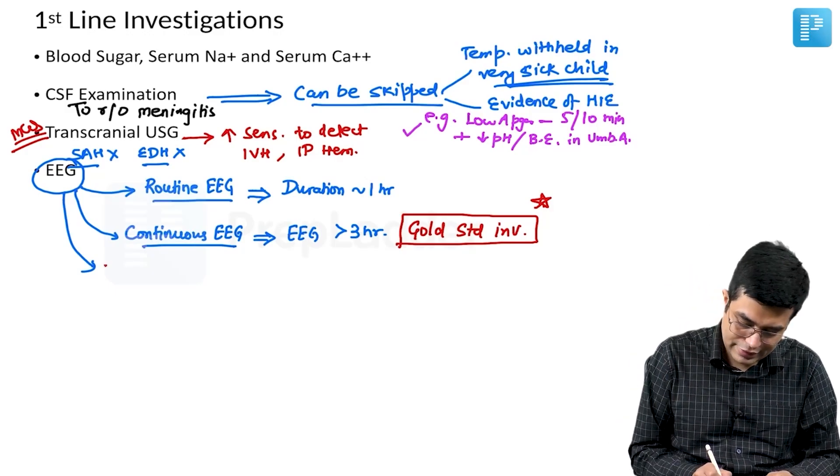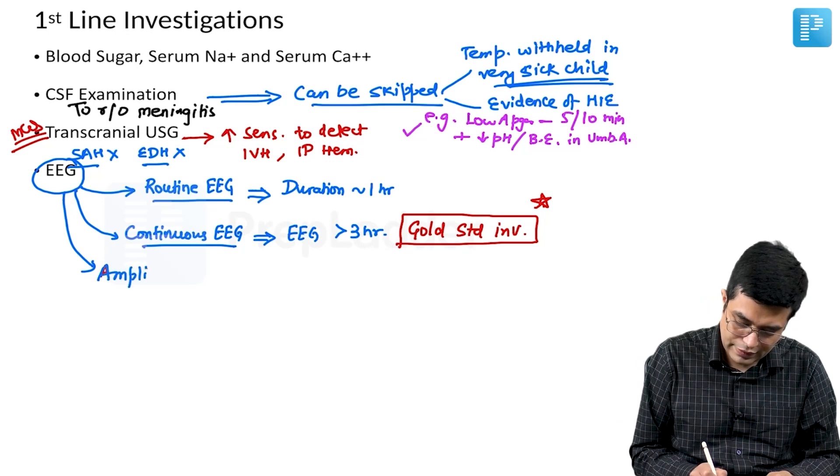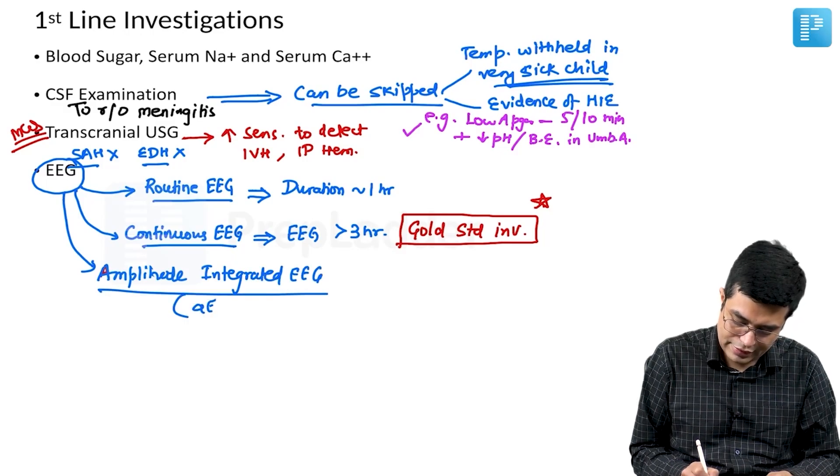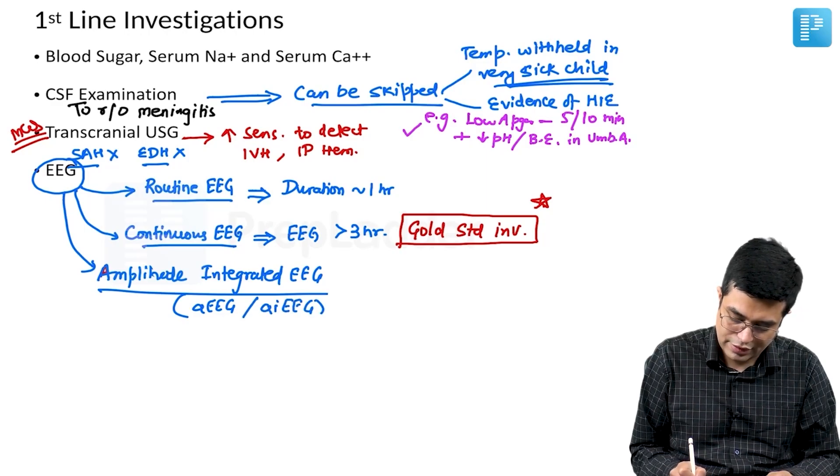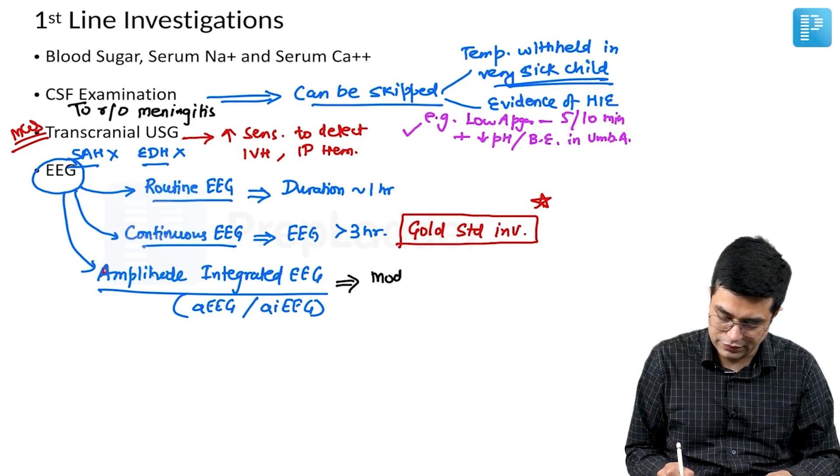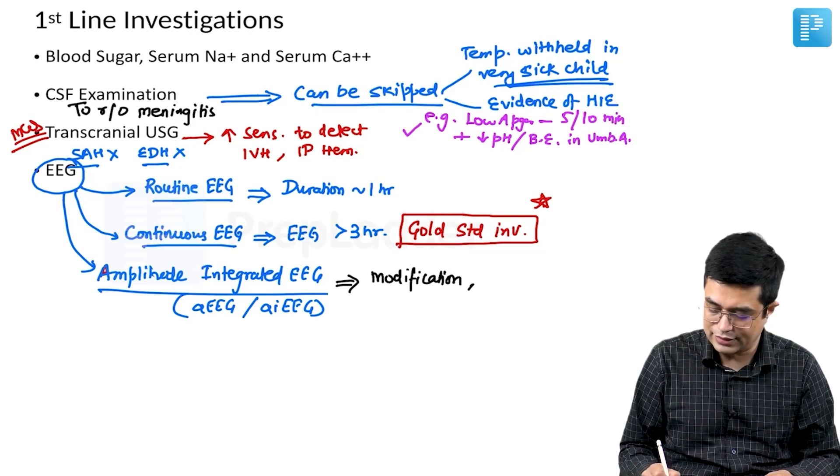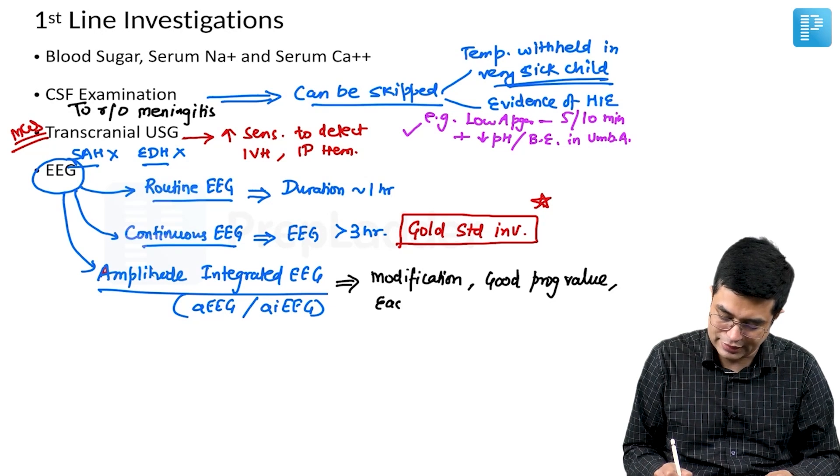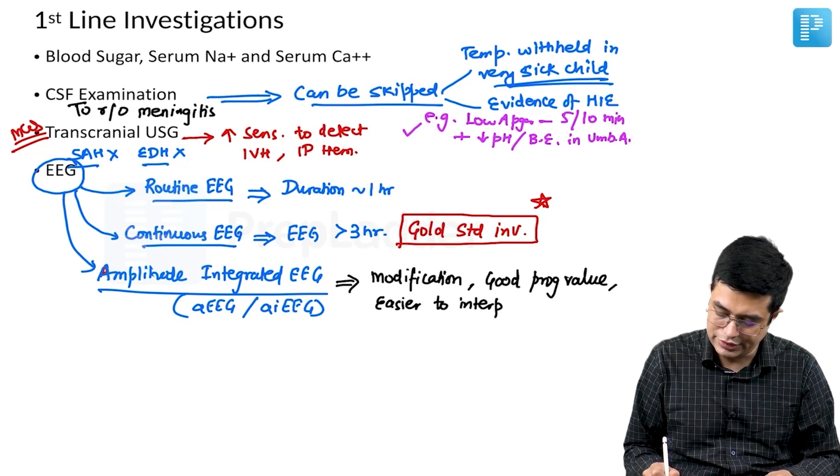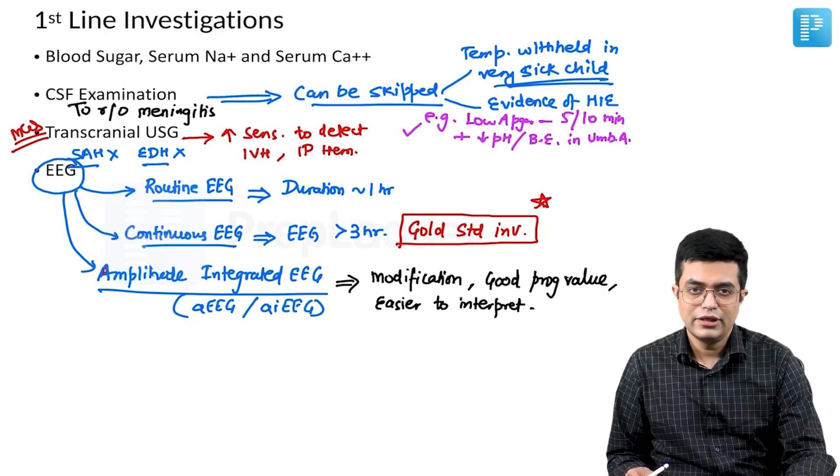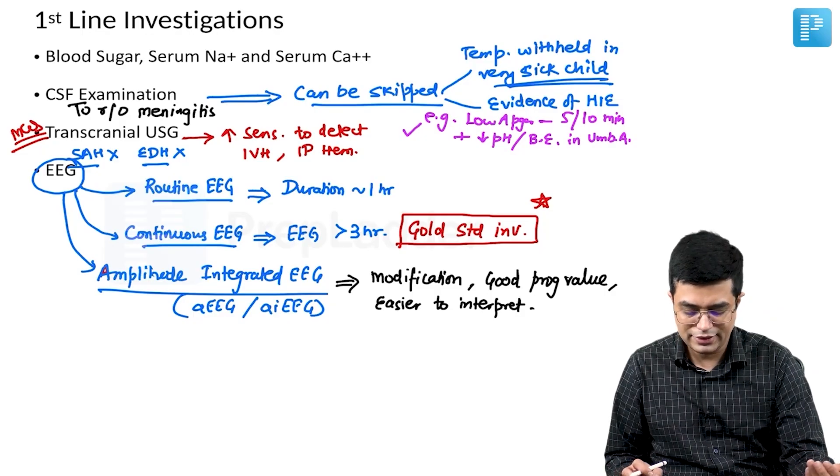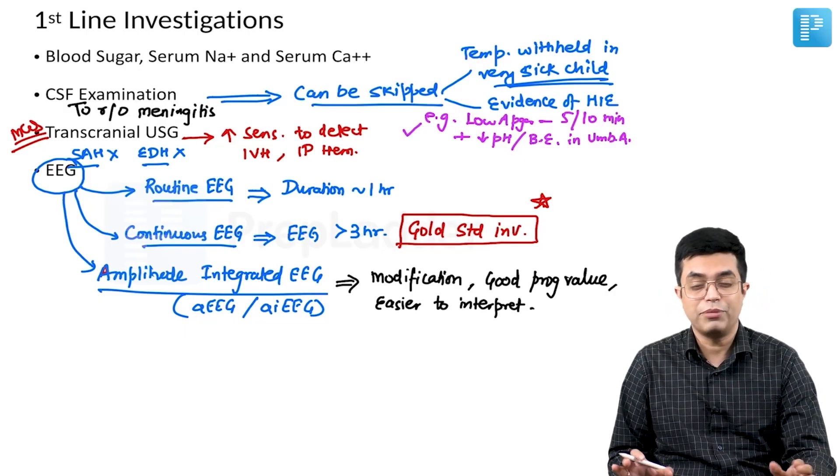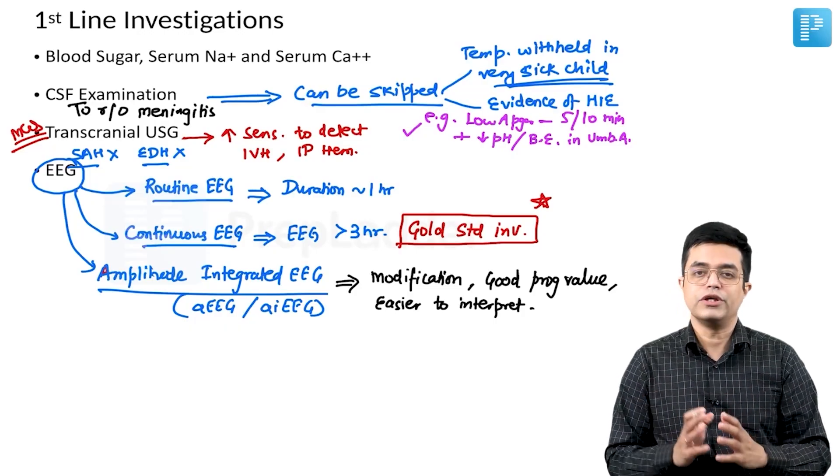And the third variety is amplitude integrated EEG. In short, it is written as AEEG. Certain books write it as AIEG. Amplitude integrated EEG is a modification of the routine EEG. And it has a good prognostic value as well as it is relatively easier to interpret. Even a relatively young resident who is not that well versed in reading EEG, even a first year MD resident, if provided you teach him the basics, he can easily identify that a particular seizure has happened in amplitude integrated EEG. But its overall sensitivity is variable, operator dependent and less compared to the routine as well as continuous EEG.